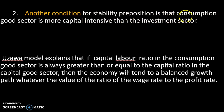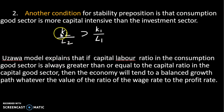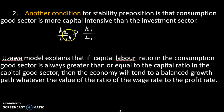The stability proposition is that the consumption goods sector must be more capital intensive than the investment sector. That means K2 divided by L2 must be greater than K1 divided by L1, where K2 and L2 are capital and labor in the consumer sector, and K1 and L1 are in the investment sector.